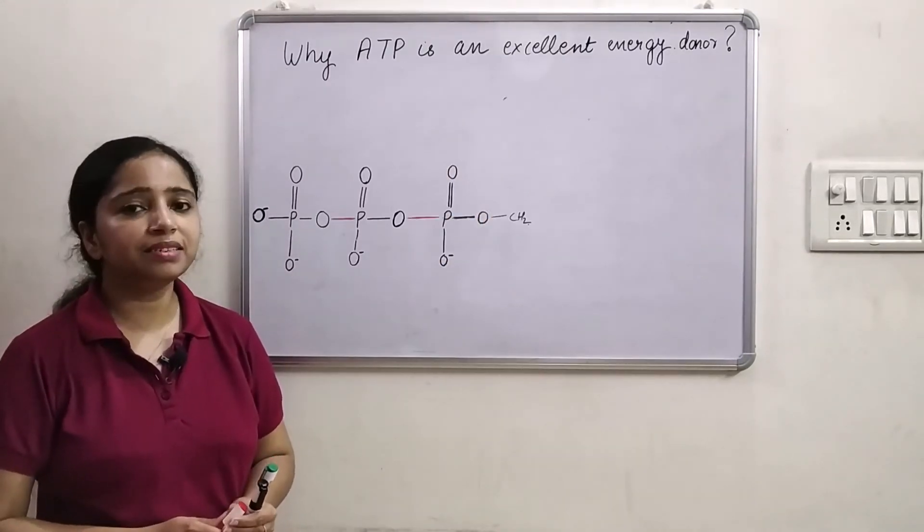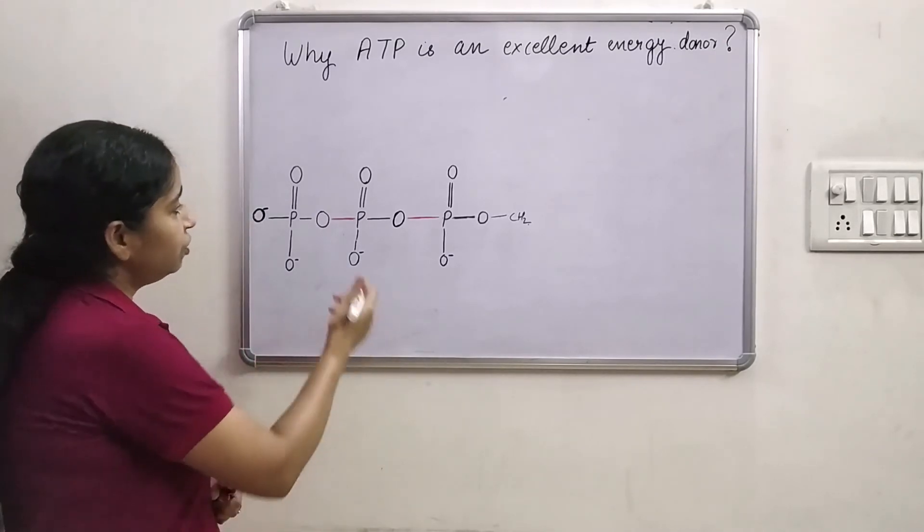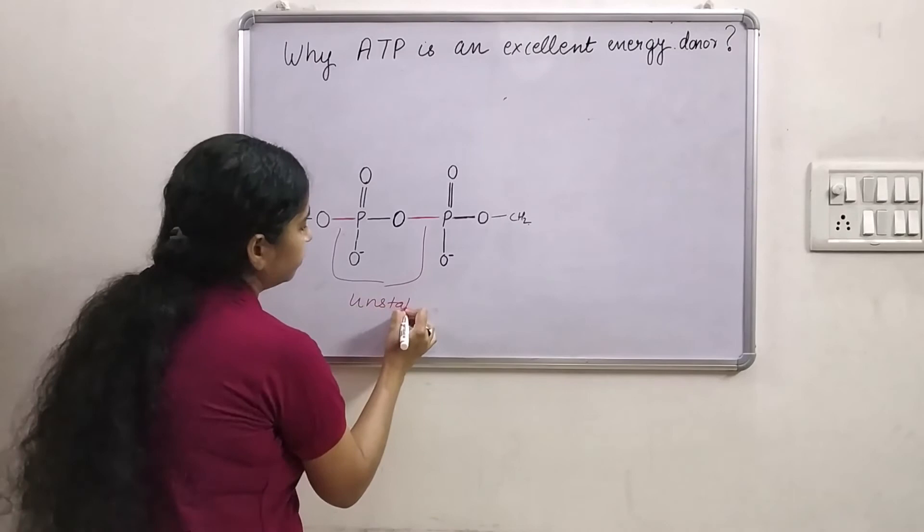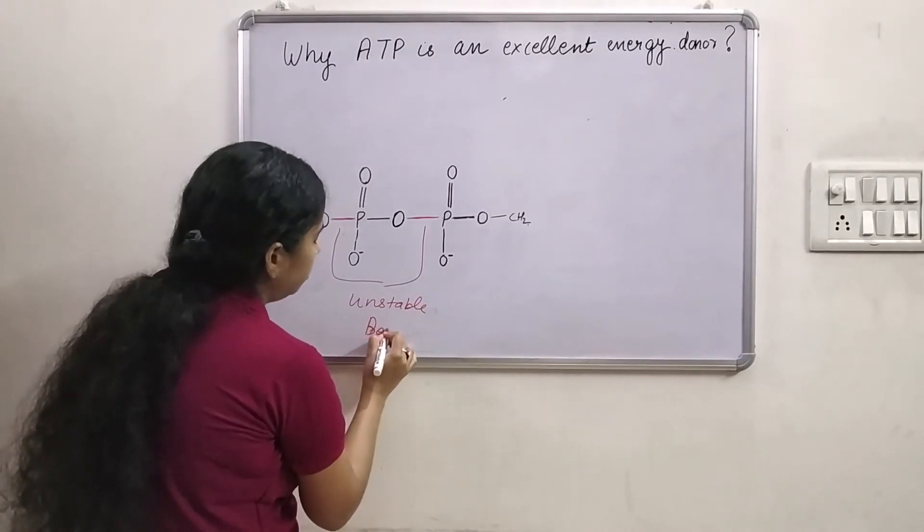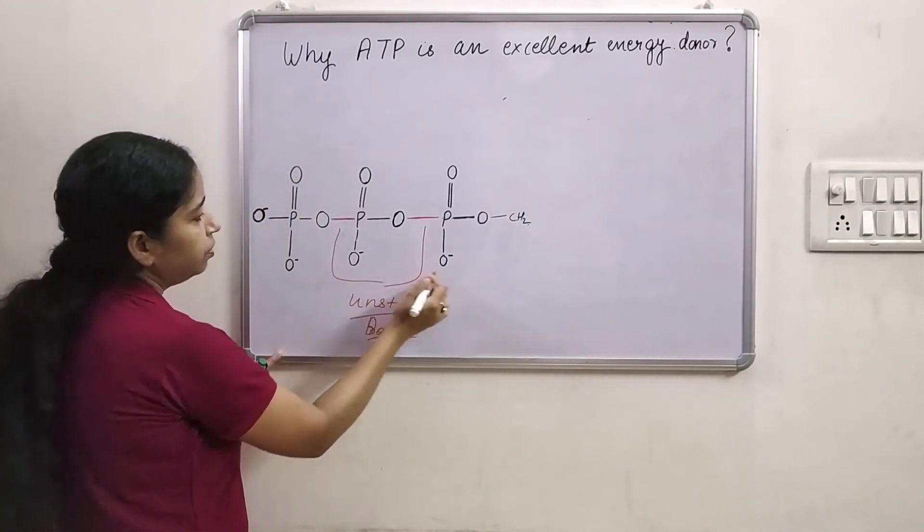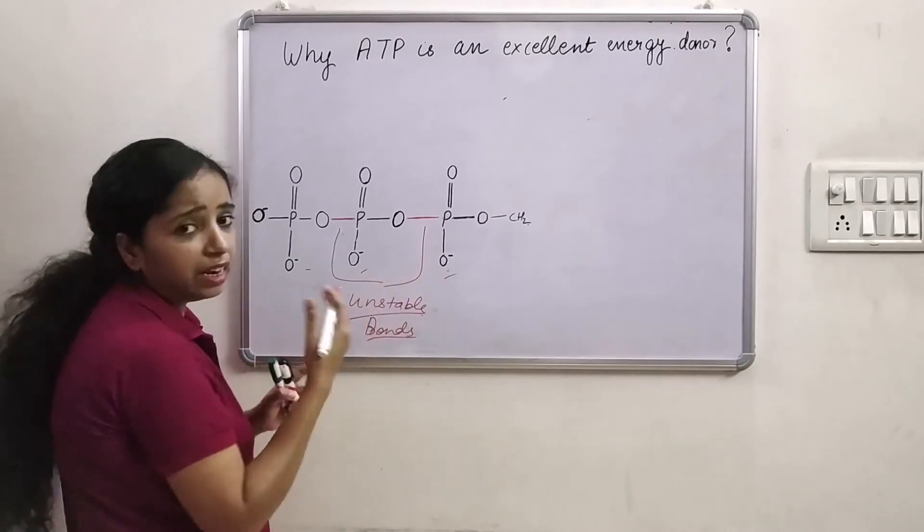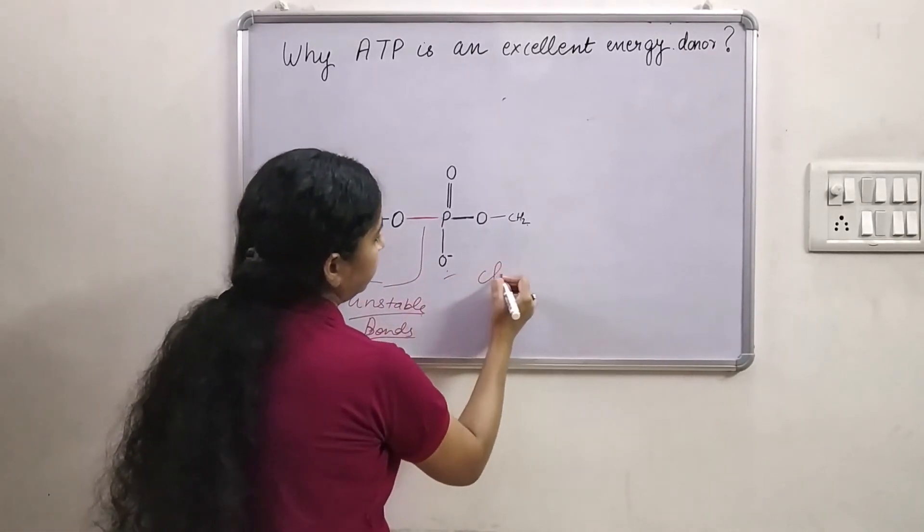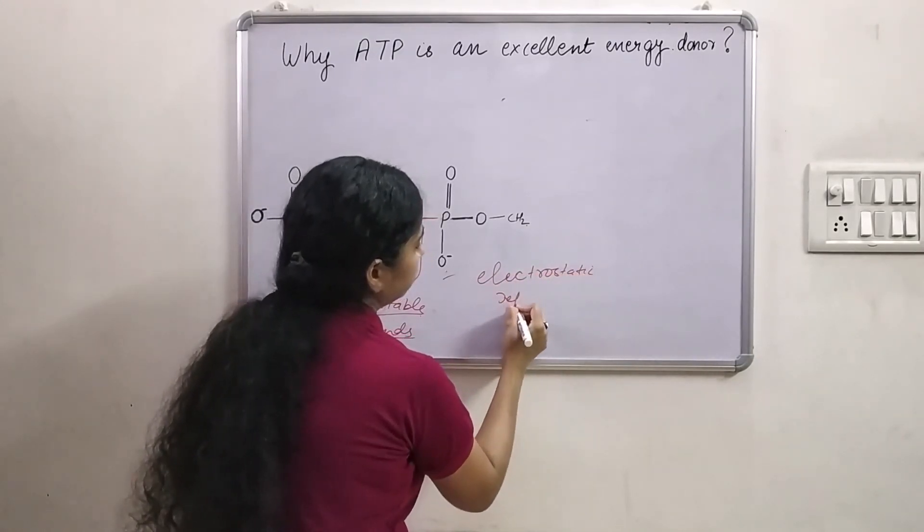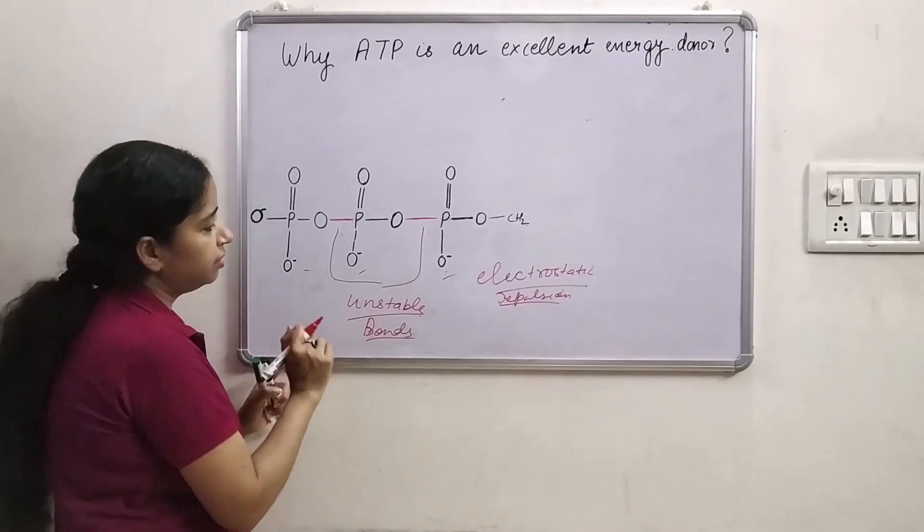Now moving on let's discuss why ATP is an excellent energy donor. So these phosphoanhydride bonds these are unstable bonds. Unstable bonds. And why these are unstable? Because they have these phosphate groups are negatively charged. And because of this negative charge these phosphates they repel each other. And because of the electrostatic repulsion, the covalent bonds joining these phosphates are unstable.